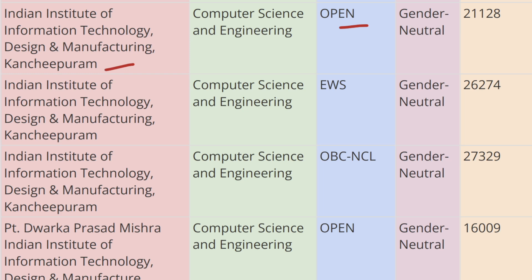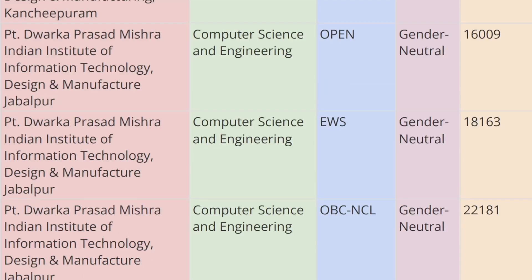Next in the list we have IIIT Kanchipuram. As you can see on screen, for Open category the cutoff rank is 21,128 for Computer Science, for EWS the cutoff rank is 26,274, and for OBC-CL category the cutoff rank is 22,181.